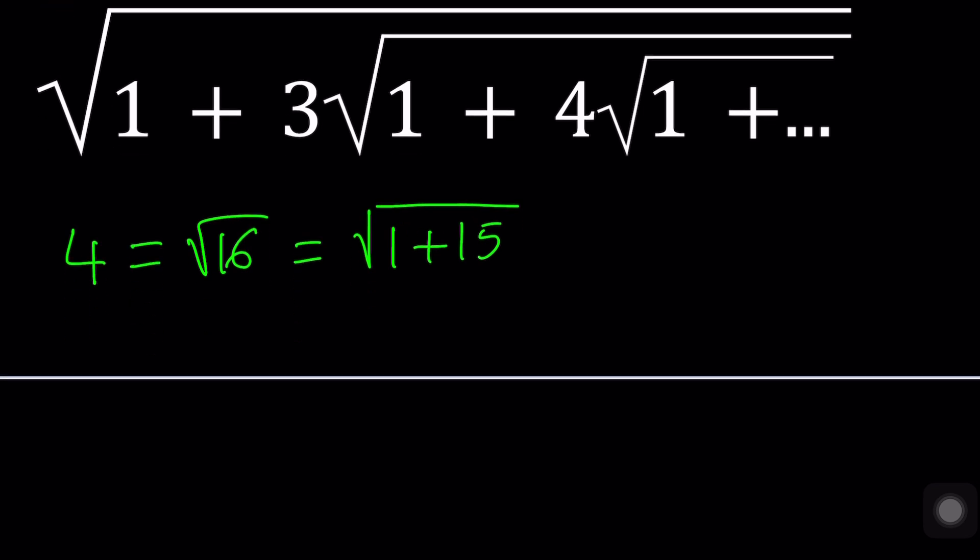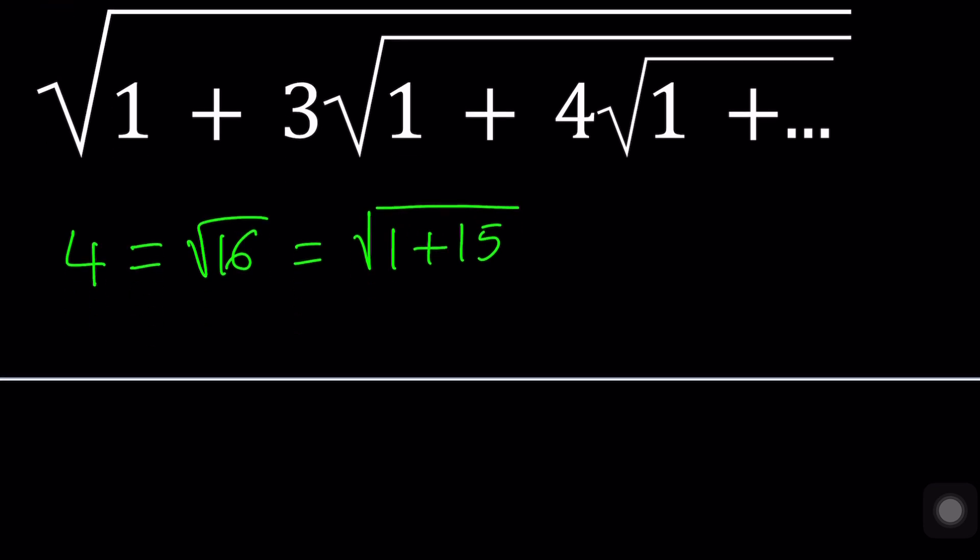The reason behind that is we're going to separate the one and factor the rest, then use the square root idea again, and keep doing this until we get a nice pattern. That's the whole idea and let's see how we can get there.